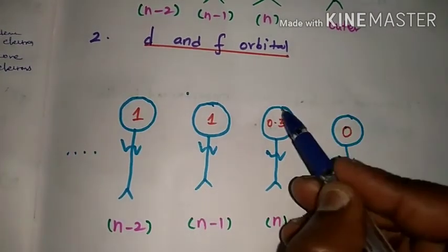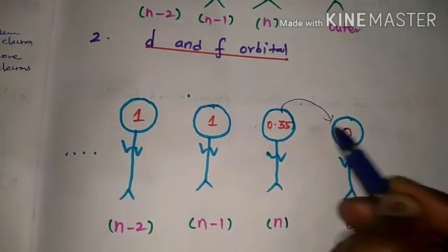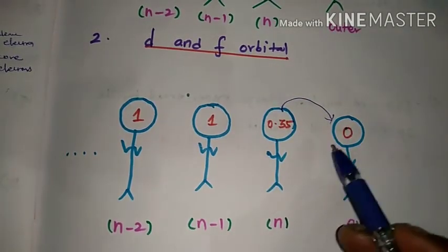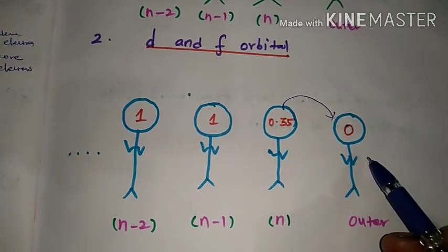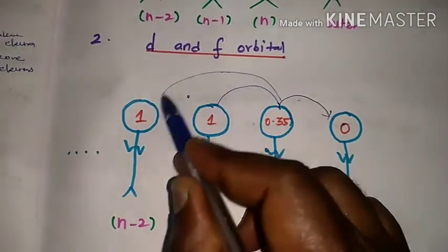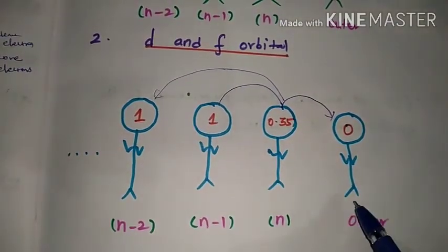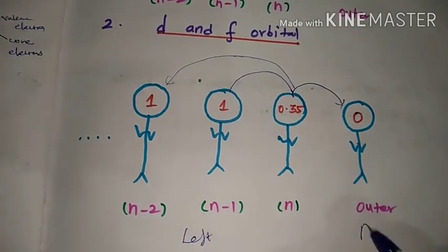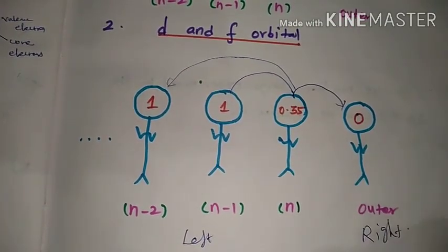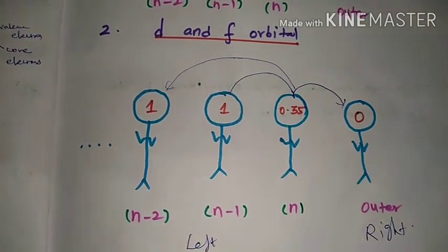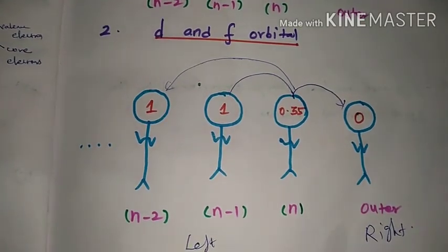For the orbital in 4s and other examples, we will combine these values. The left side orbitals contribute, while the right side has no values. This is the second type of calculation.